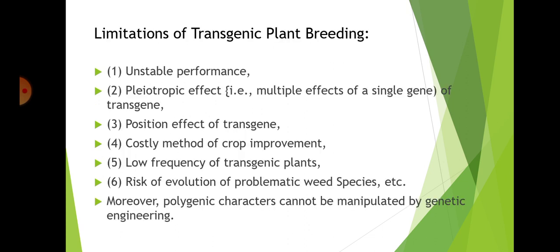Some limitations exist in transgenic plant breeding. The main limitations are: unstable performance and pleiotropic effects — that is, multiple effects of a single transgene; position effect of the transgene; costly method of crop improvement; low frequency of transgenic plants; risk of evolution of problematic weed species; and polygenic characters cannot be manipulated by genetic engineering.